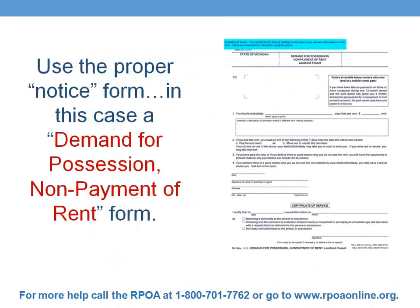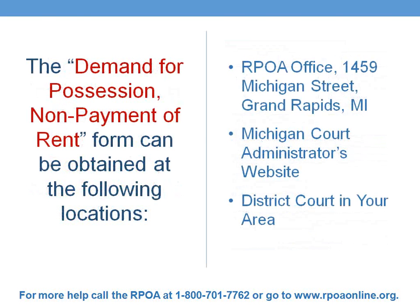Starting an eviction for non-payment of rent requires the use of the proper form to send notice to the tenant. This form is called the Demand for Possession, Non-Payment of Rent form, sometimes called a 7-day notice to quit for non-payment. However, the form you must use is the Demand for Possession for Non-Payment of Rent form — make sure you use the correct form. The Demand form can be found at the RPO office in Grand Rapids, the Michigan Court Administrator's website, or at a district court near you.